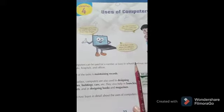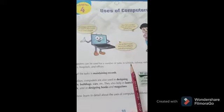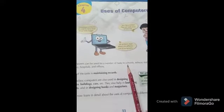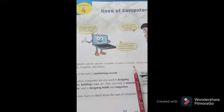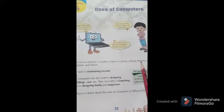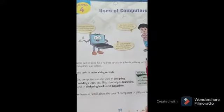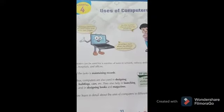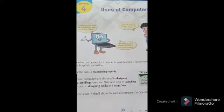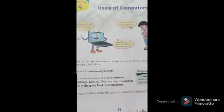For example, in schools, where is all your record kept? In the computer. The computer is used to keep records in schools. In railway stations, it keeps records of passengers, and tickets are printed from computers before being given to you.